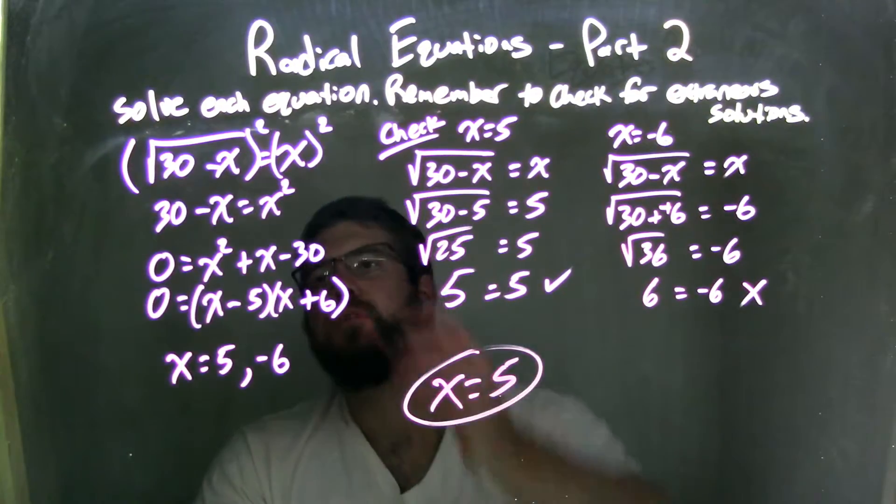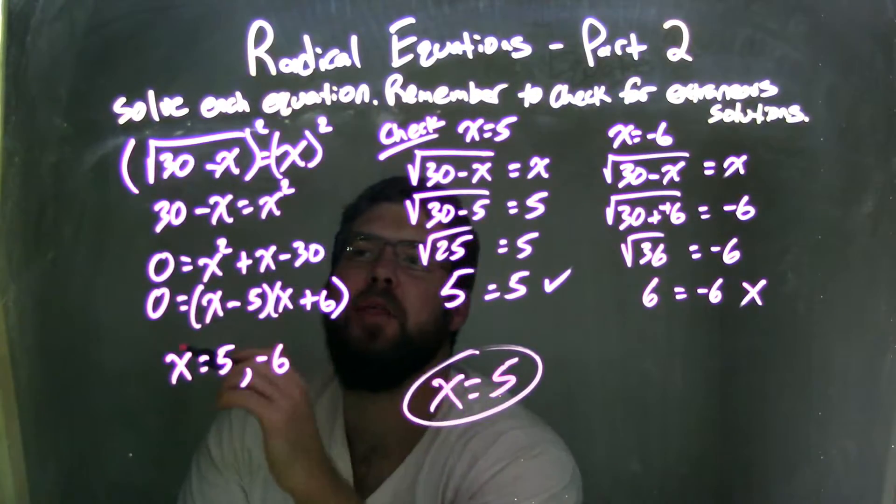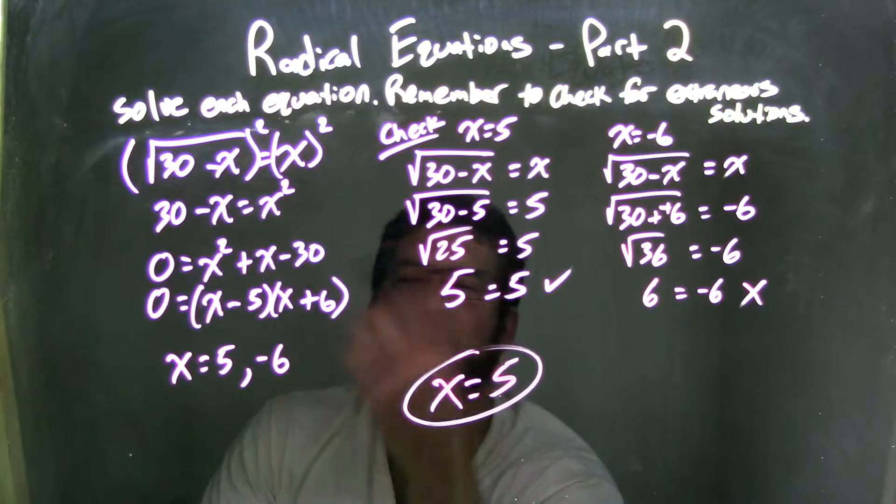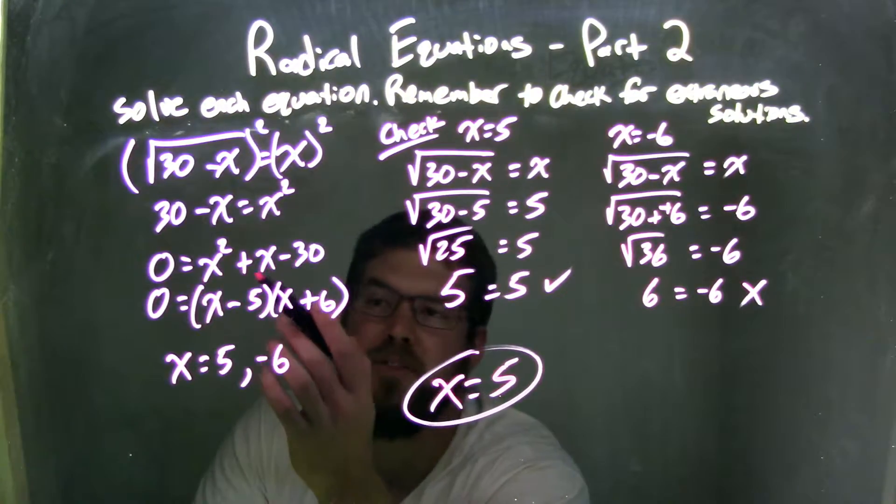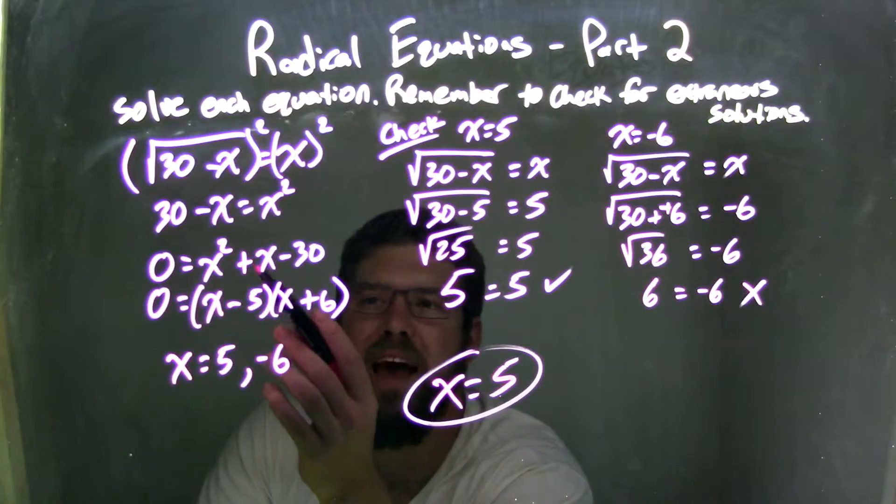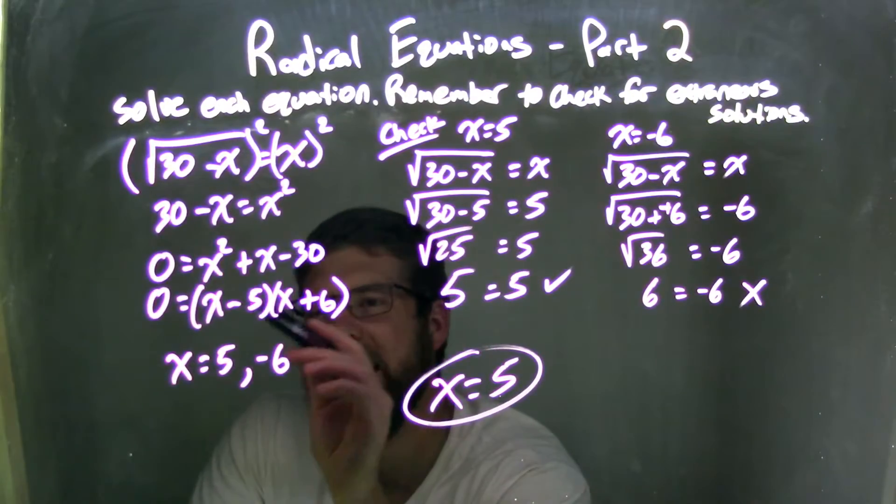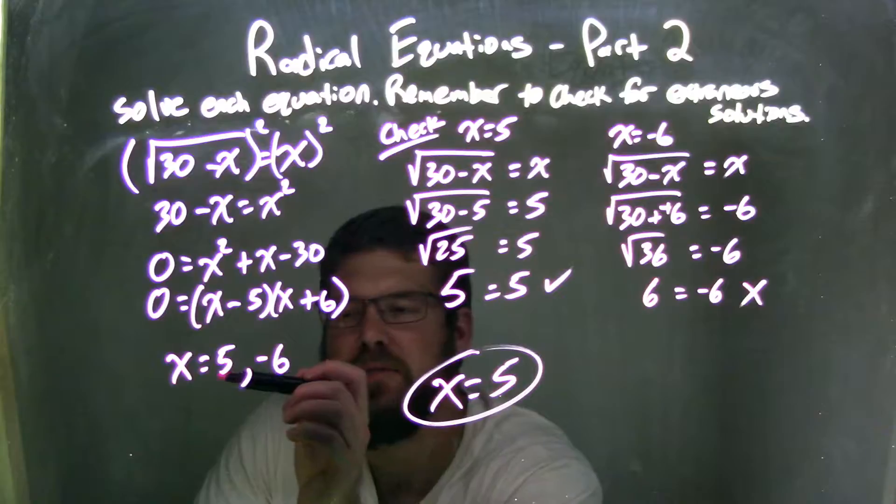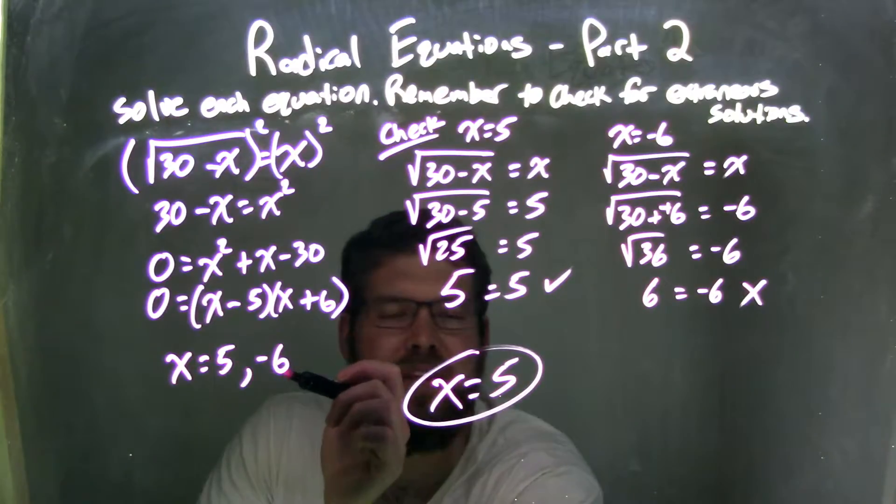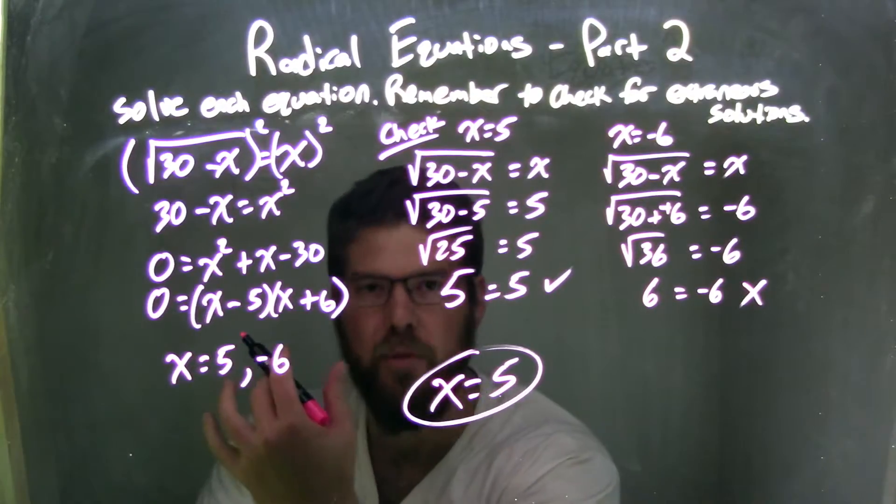So let's recap. We start with the square root of 30 minus x equals x. I squared both sides to eliminate the square root, and then I brought everything over to one side, so I had a quadratic x squared plus x minus 30. From there I factor getting x minus 5 and x plus 6. Knowing that when set equal to 0, my two solutions are x equals 5 and x equals negative 6.